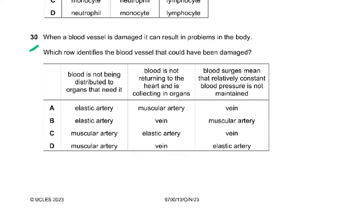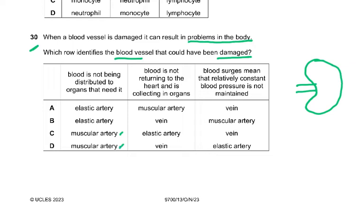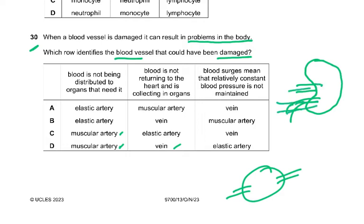Question 30. When a blood vessel is damaged it can result in problems in the body. Blood not being distributed to organs — when blood reaches an organ the artery becomes a muscular artery. Blood not returning to the heart and collecting in the organs — that's a vein. Blood surges meaning relatively constant blood pressure is not maintained — that would be the elastic artery. So the answer to question 30 is D.